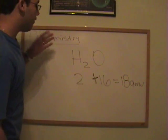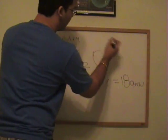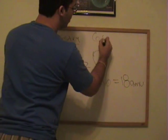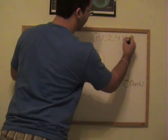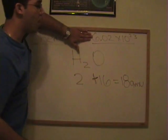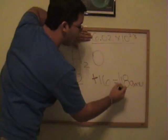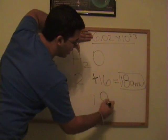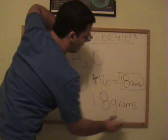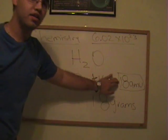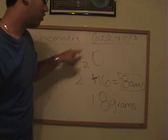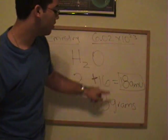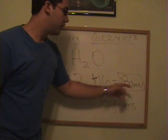However, if you have 6.02 times 10 to the 23rd, if you have this many water molecules, then instead of 18 AMU, it's going to be 18 grams. Notice, it's the same exact thing. The only difference is that if you have one water molecule, it's AMUs, but if you have 6.02 times 10 to the 23rd water molecules, then it's 18 grams.